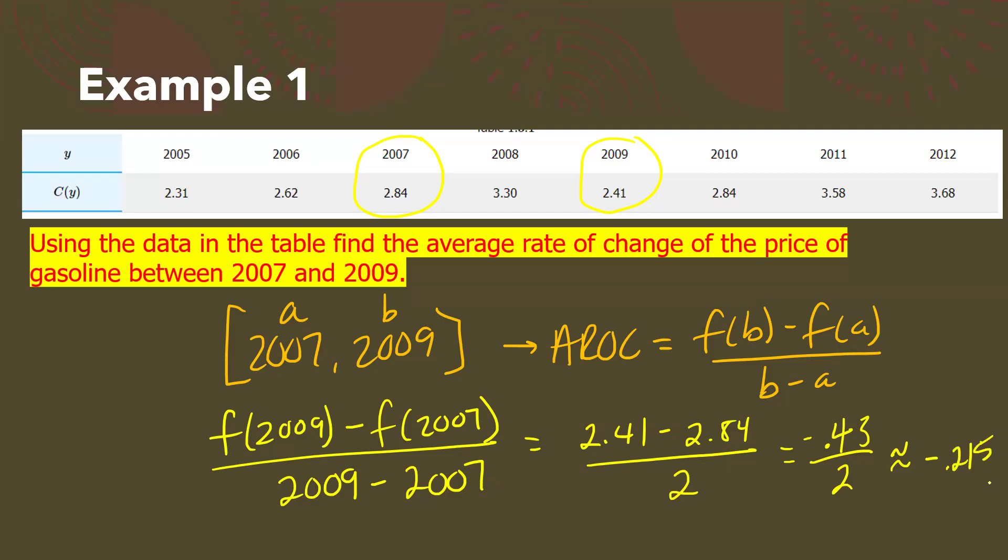So then we want to find our unit rate. Unit rate means that your denominator needs to equal one. So all you're going to do is simplify this. So approximately, what is negative 0.43 divided by two? Negative 0.215. Yeah. So that's our average rate of change from 2007 to 2009. Well, telling someone that doesn't really make sense, right? Like, oh, negative 0.215. What does that mean in terms of gas? Doesn't make sense. So you have to put it in terms of what the problem is talking about.